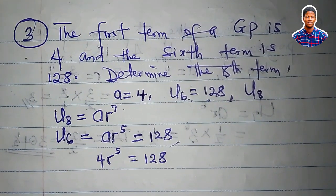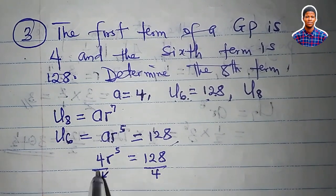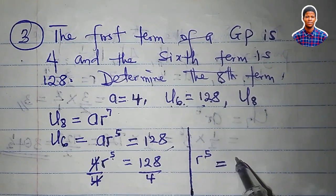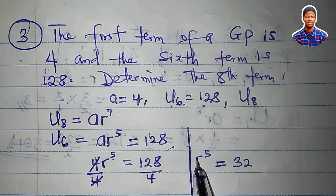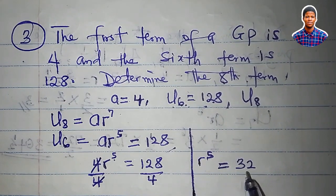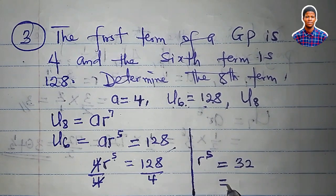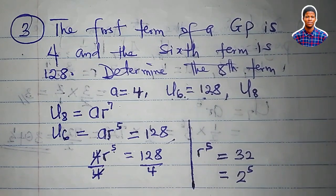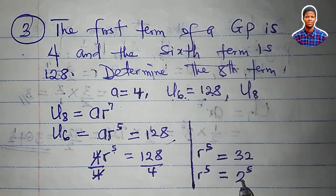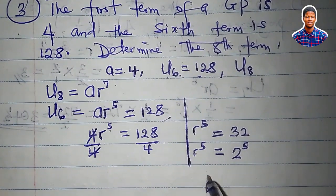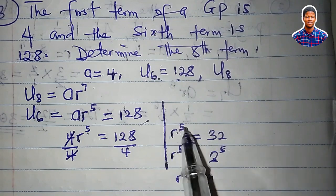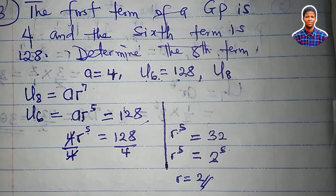Dividing both sides by 4, r^5 = 32. Now, 32 = 2^5, so since the powers are the same, the bases must also be the same. Therefore r = 2. Alternatively, you can take the fifth root of both sides: the fifth root of 32 is 2. So the common ratio is 2.